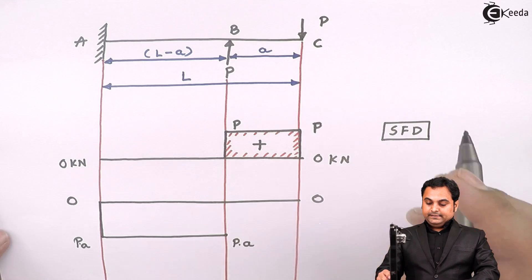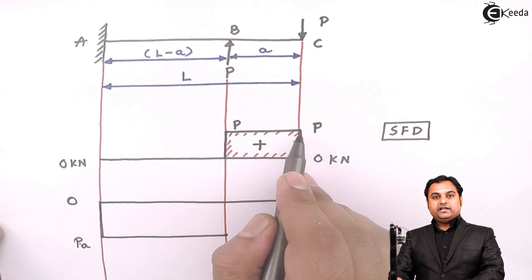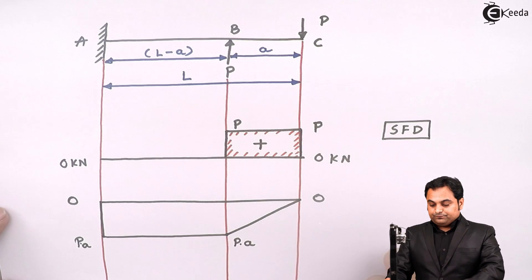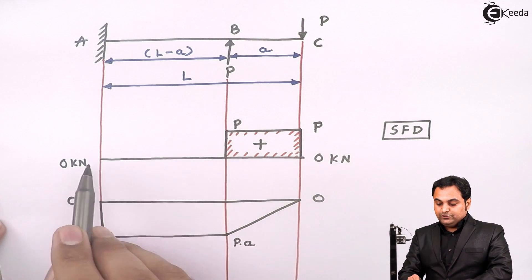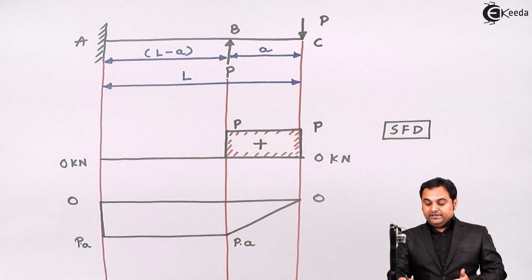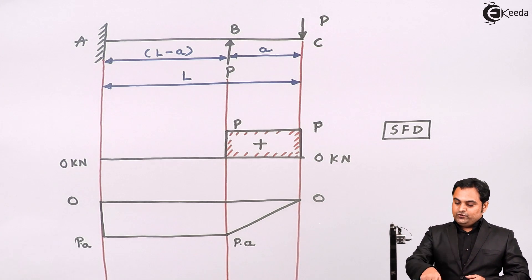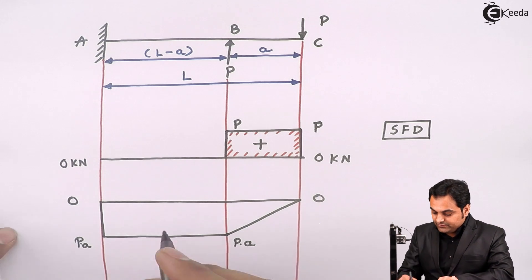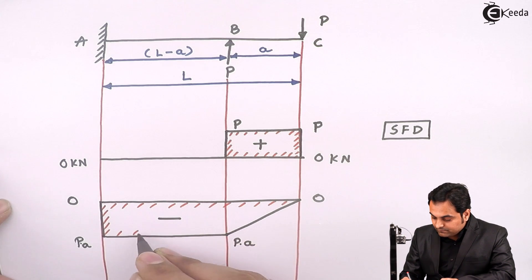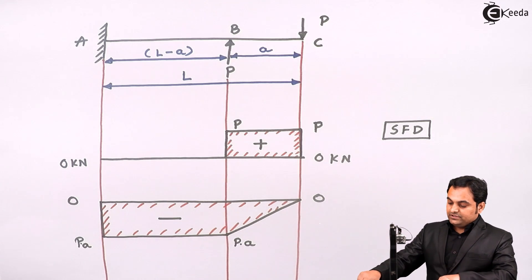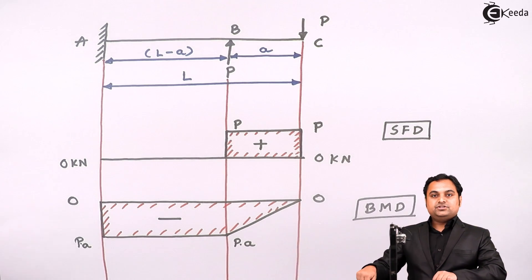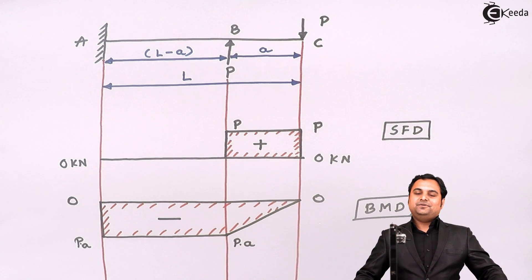On the left-hand side of A there are no forces present. From B to C, shear force was a straight line so bending moment will be an inclined line. From A to B shear force was zero, so bending moment is a straight horizontal line. The value is negative. This is the bending moment diagram. Once we have completed both the shear force diagram and bending moment diagram, the problem is completed. Thank you.